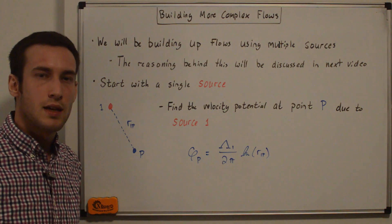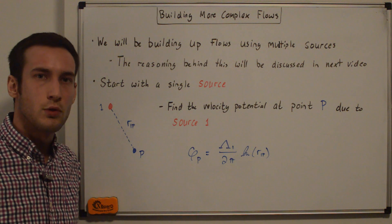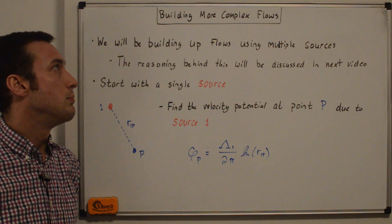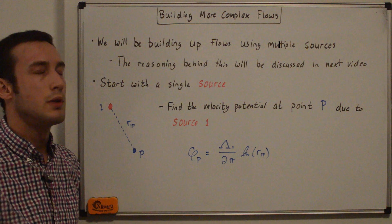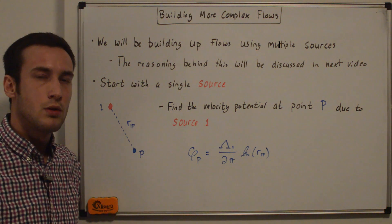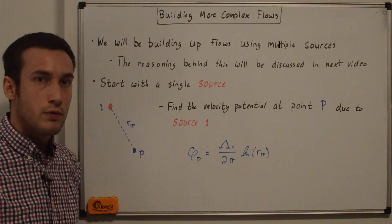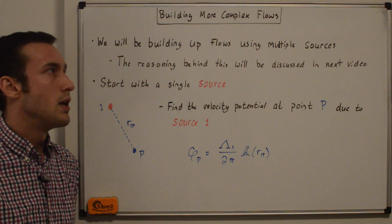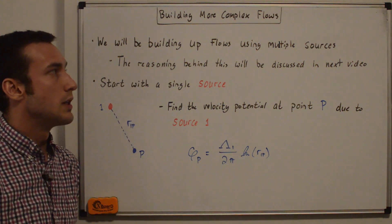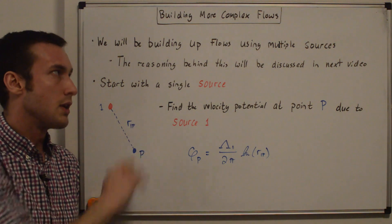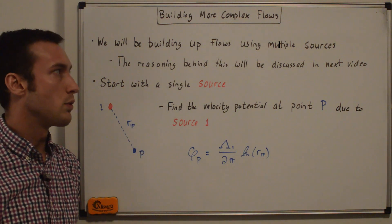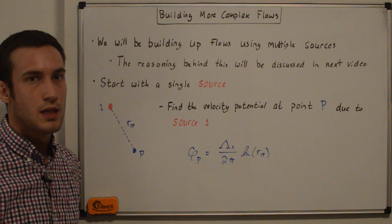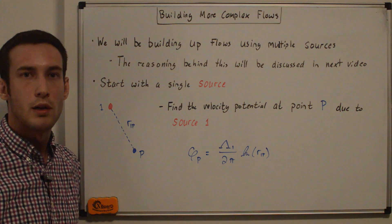Hey, everyone. This video is the next step in our full derivation of the source panel method and vortex panel method. In this video, we're going to be building more complex flows. In previous videos, I've gone through elementary flows such as uniform flow, source flow, and vortex flow. In this video, we're going to be building up using multiple sources, but you can also do this with vortices for the vortex panel method. The reasoning behind this will be discussed in the next video titled something like 'flow around an airfoil.'